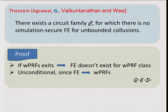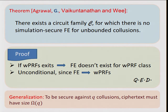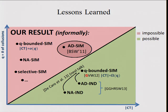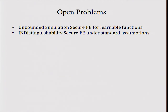To sum up the theorem: there exists this circuit family C for which there is no simulation-secure functional encryption for unbounded collusions. If weak pseudorandom functions exist, then I showed how you can break the security of these weak PRFs by assuming the existence of functional encryption. Moreover, this result is unconditional since functional encryption clearly implies weak PRFs. As a generalization, to be secure against Q collusions we show the ciphertext must grow with Q. We have ruled out lots of simulation-based definitions for functional encryption, and we have a quantitative bound that the ciphertext size must grow with the number of collusions. Open problems include whether you can construct unbounded simulation-secure functional encryption for weaker classes such as learnable functions, and whether you can construct indistinguishability-based functional encryption under more standard assumptions.